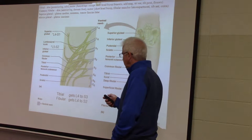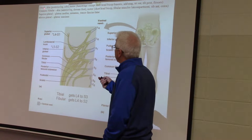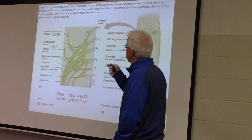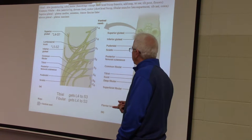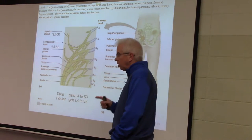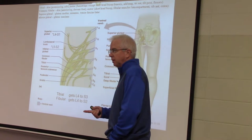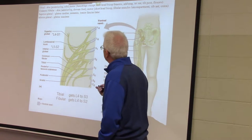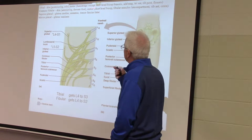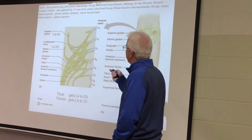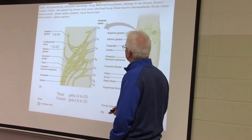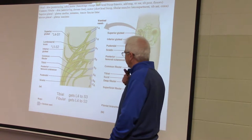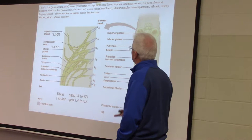The sciatic nerve is made of two nerves really — the tibial and the common fibular. The first motor group we'll look at are the hamstrings. Remember: there's only one of the quads that goes all the way to the hip, and there's only one of the hamstrings that doesn't. All the ones that do go to the hip are innervated by the tibial, and the only one that doesn't is the short head of the biceps femoris — it stops short, doesn't go to the ischial tuberosity, and it gets fibular innervation.